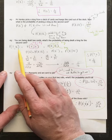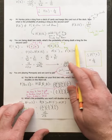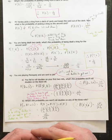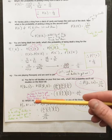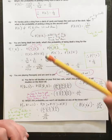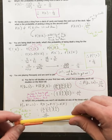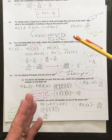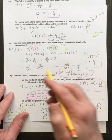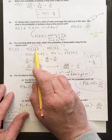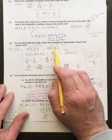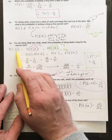You are being dealt two cards. What's the probability of a king being dealt as the second card? This can't be answered simply because it depends on what happened the first time. The first card could either be a king or not a king. So we have two situations: the probability of a king and then a king, and the probability of not a king and then a king.